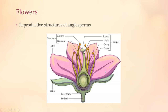Everything else is designed to help reproduction in some way. If the flower smells good, it's trying to attract something to pollinate it. If it looks pretty, it's trying to get something to come pick it or brush against it to disperse seeds. The petals and sepals don't play a role in fertilization or egg development directly, but can become part of the fruit if accessory structures are involved.